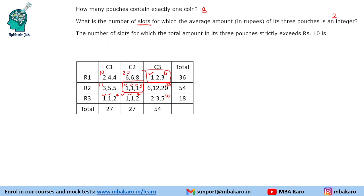The final question: the number of slots for which the total amount in its three pouches strictly exceeds 10 rupees. Strictly exceeds means greater than 10, not greater than or equal to 10. So we do not count the slot with total 10. Looking at the values, we have three such slots where the total is strictly greater than 10. That completes the solution to this set.